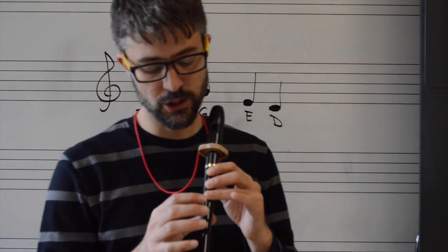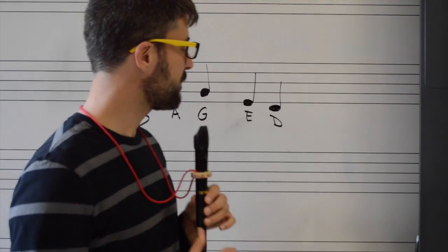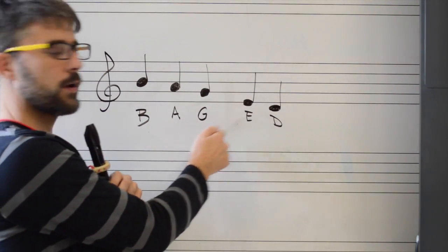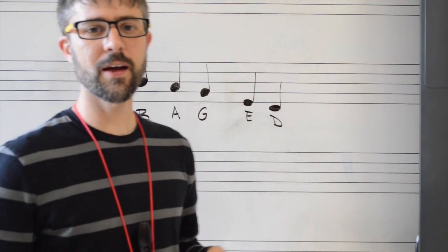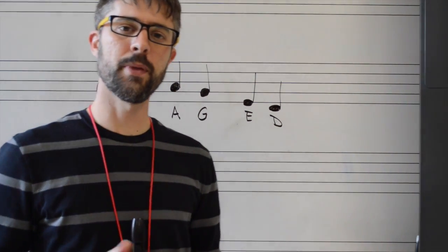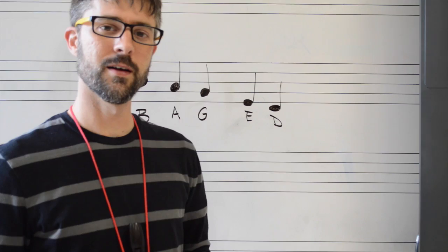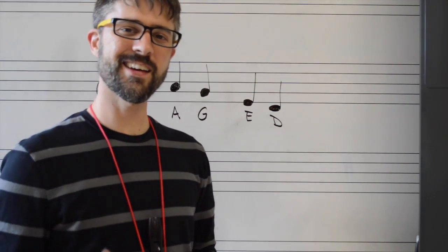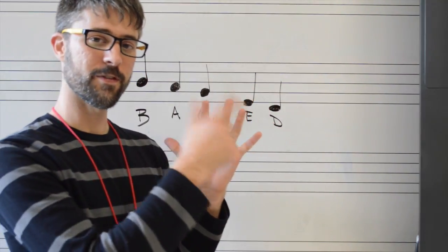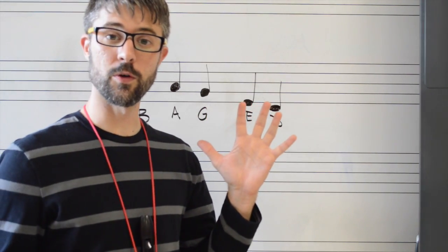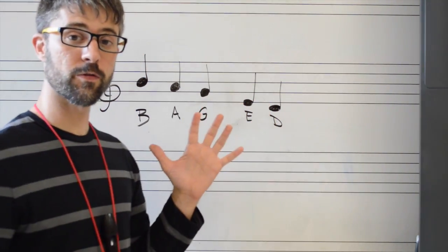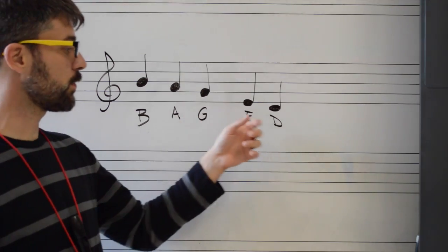So now we have B, A, G, E, and low D. So we have five notes here that we have learned. These five notes make up what we call the pentatonic scale. The pentatonic scale. Penta, five. Tonic, tones. Five tone scale or five note scale. One, two, three, four, five.